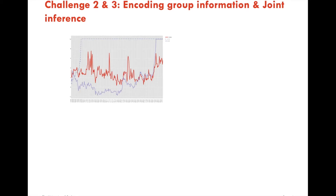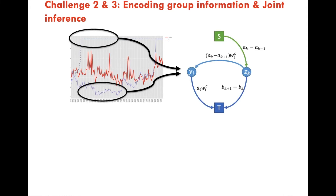Challenges 2 and 3 are encoding group information and joint inference. In our example, observing Stock A and the whole industry's price behavior could provide strong evidence for Stock B's price changes. We formulate the joint inference problem by treating each stock as a node in a Markov random field and a group of stocks as a maximum clique.